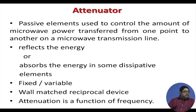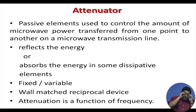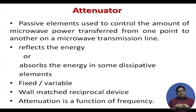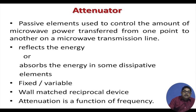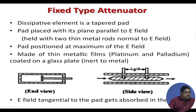The attenuator is a well-matched, reciprocal device. It has no directivity — both ends should be well matched so no mismatch takes place. Attenuation is a function of frequency, because at high frequencies the way we attenuate changes when we change the signal frequency.